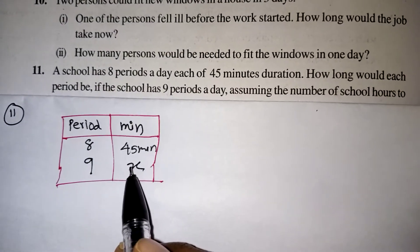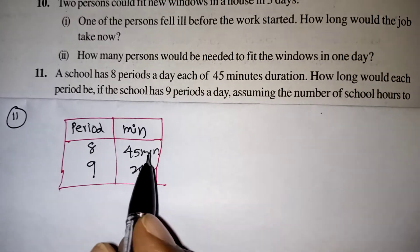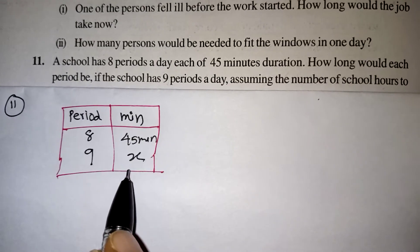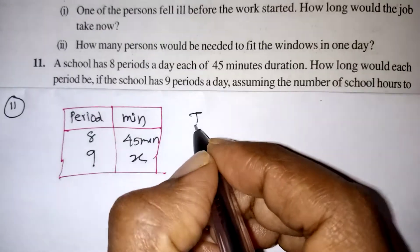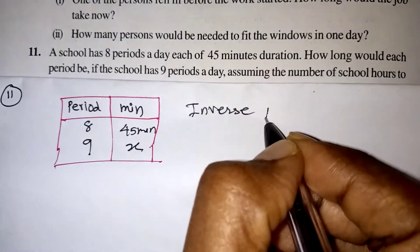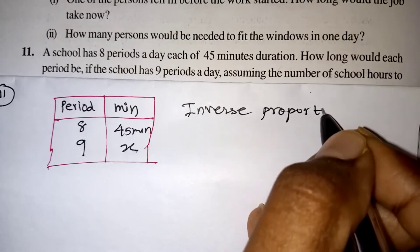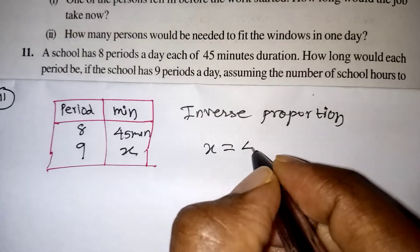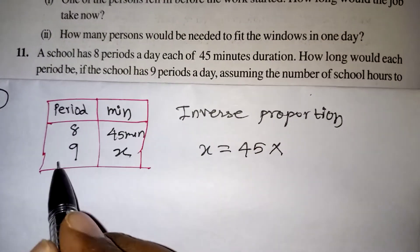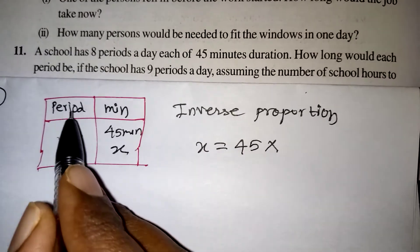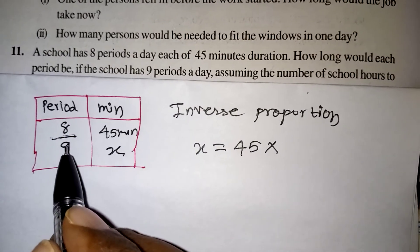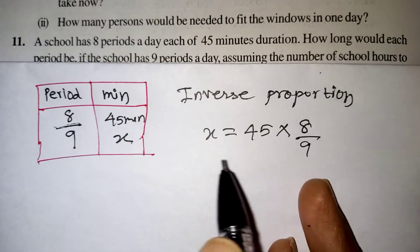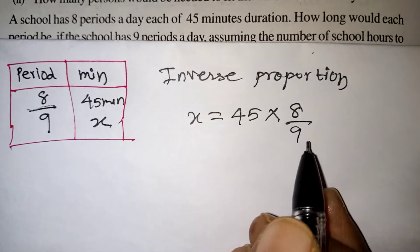If there are 9 periods, how many minutes will each session be? If the number of periods increases, the time taken for each period should decrease. One is increasing, one is decreasing — this will come under inverse proportion. So since it is an inverse proportion, we have a shortcut. Write x equals, and the number given along with x is 45, multiplied by. Now this number should be taken as a fraction: 8 by 9. Since it is an inverse proportion, we are taking it as it is. If it were a direct one, we would take the reciprocal.